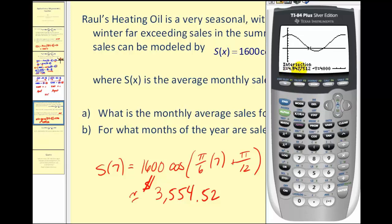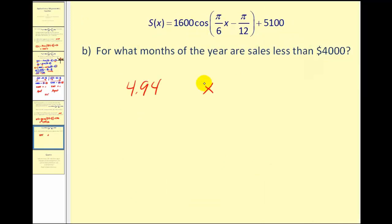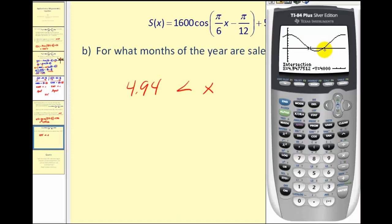Let's record that. So if x is greater than four point nine four, and let's find the second point of intersection. Scroll over to the right. Press enter three times. This value is approximately x equals eight point zero five.